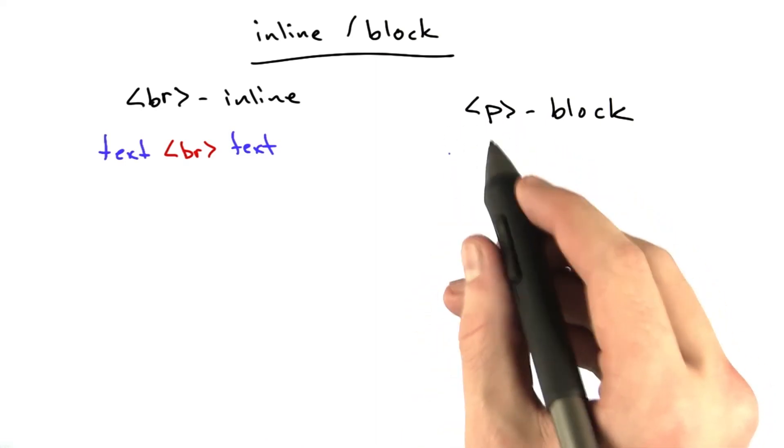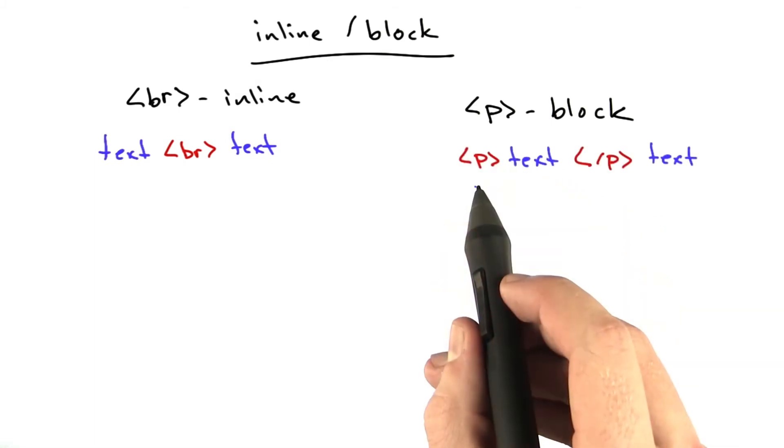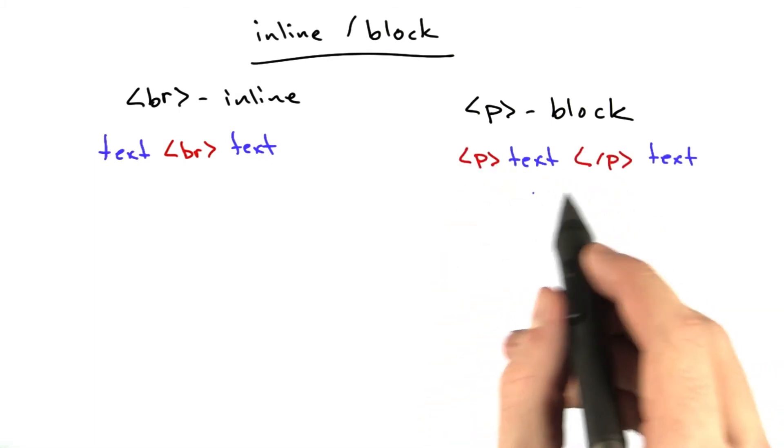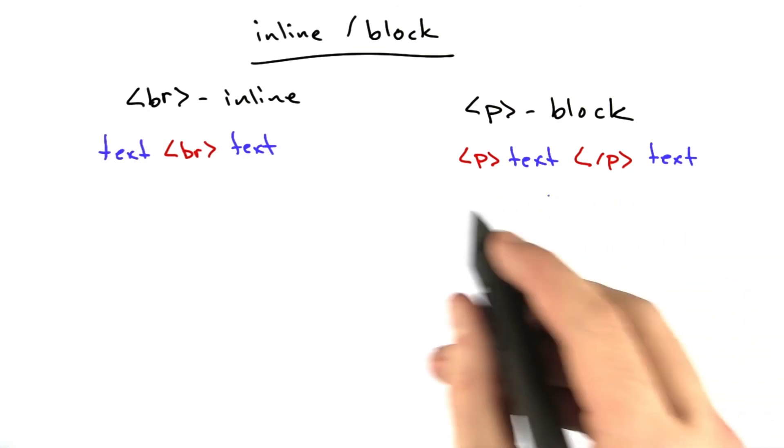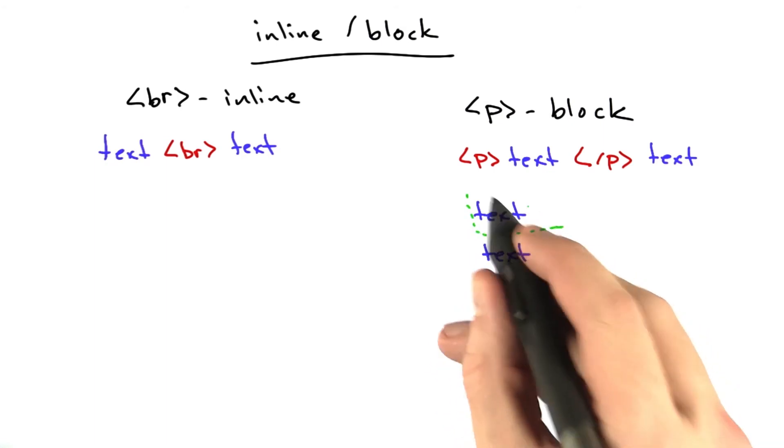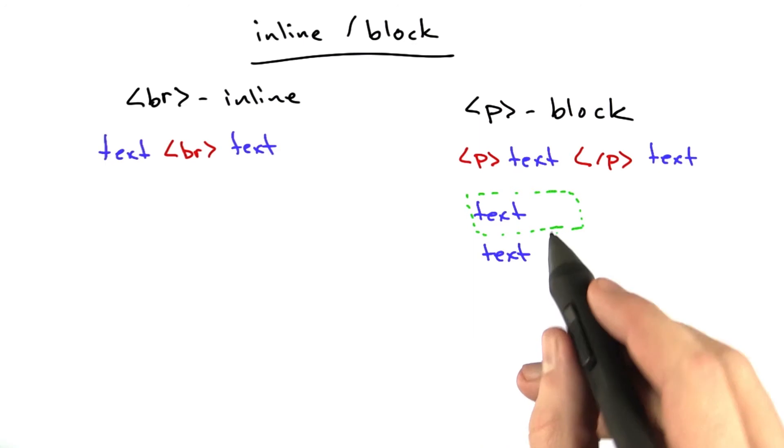The p tag actually makes an invisible box. When we have HTML that looks like this, this creates an actual box. Instead of just rendering text blank line, what this is actually rendering is something sort of like this. You've got two lines of text and there's actually this invisible box around text. That's what the p tag does, is it makes this invisible box.